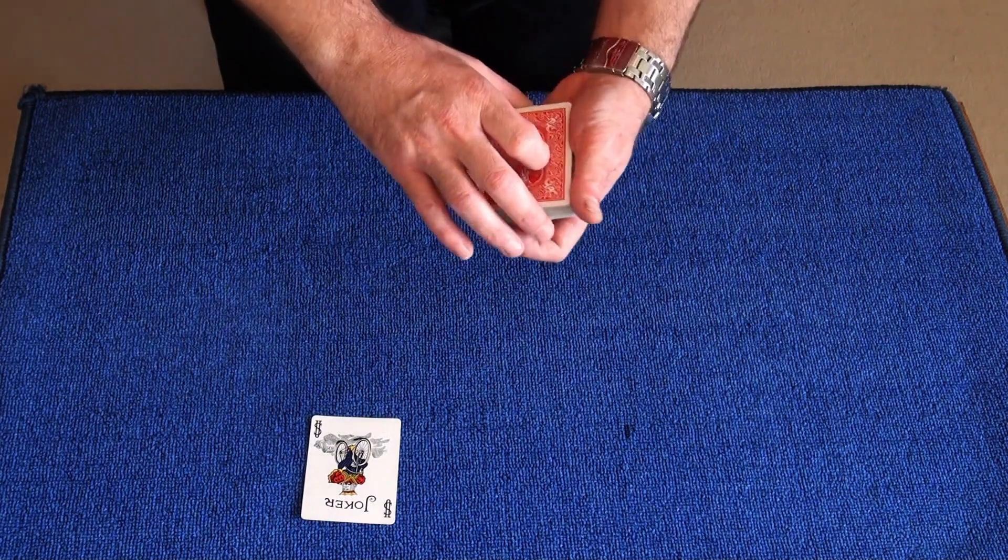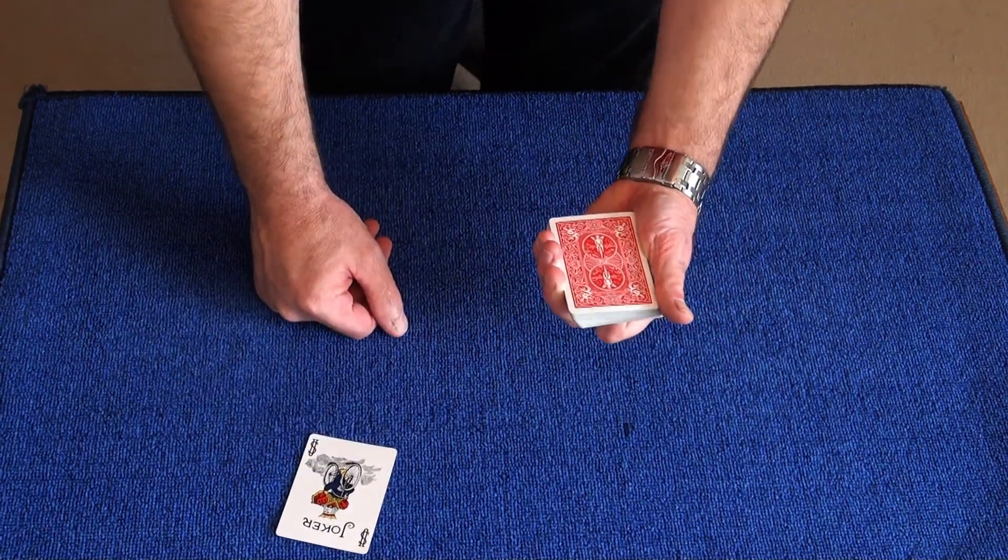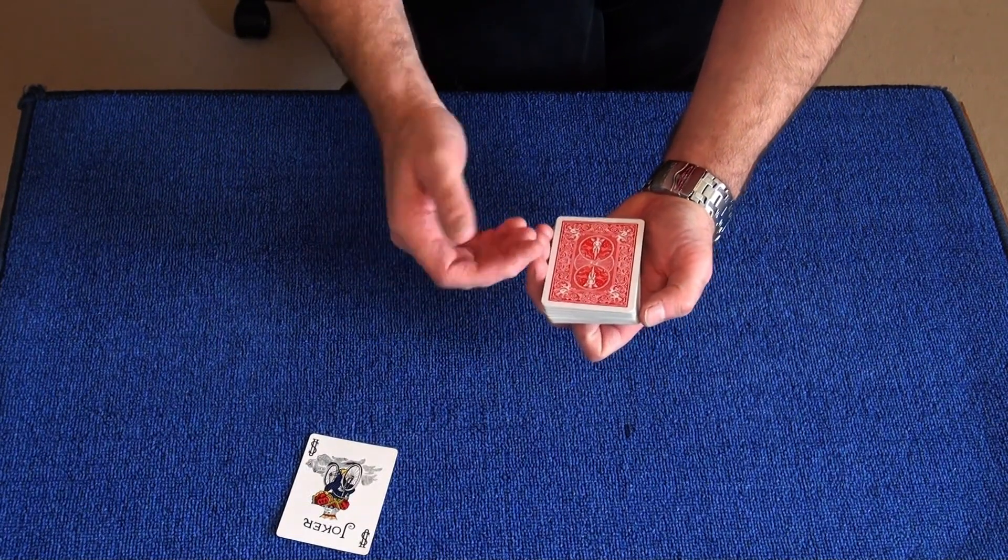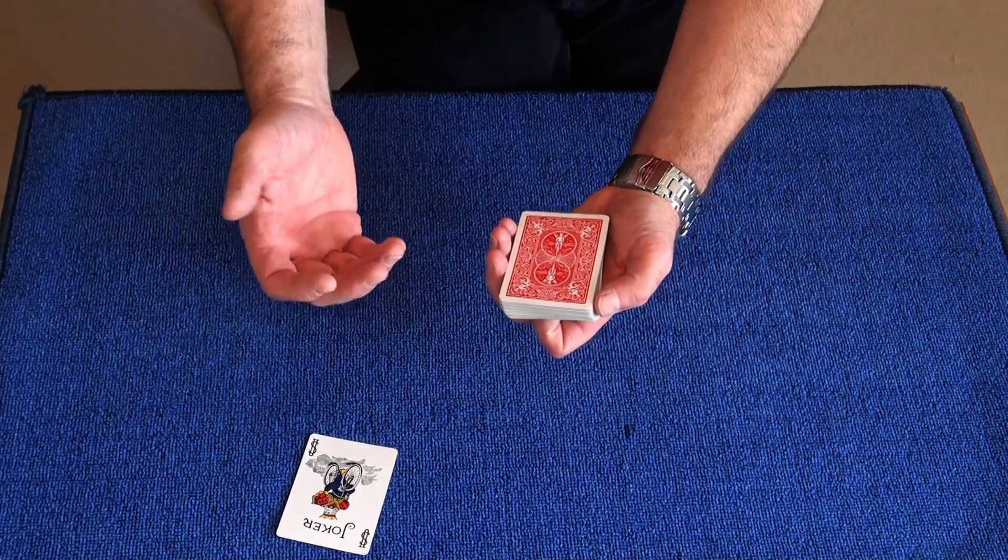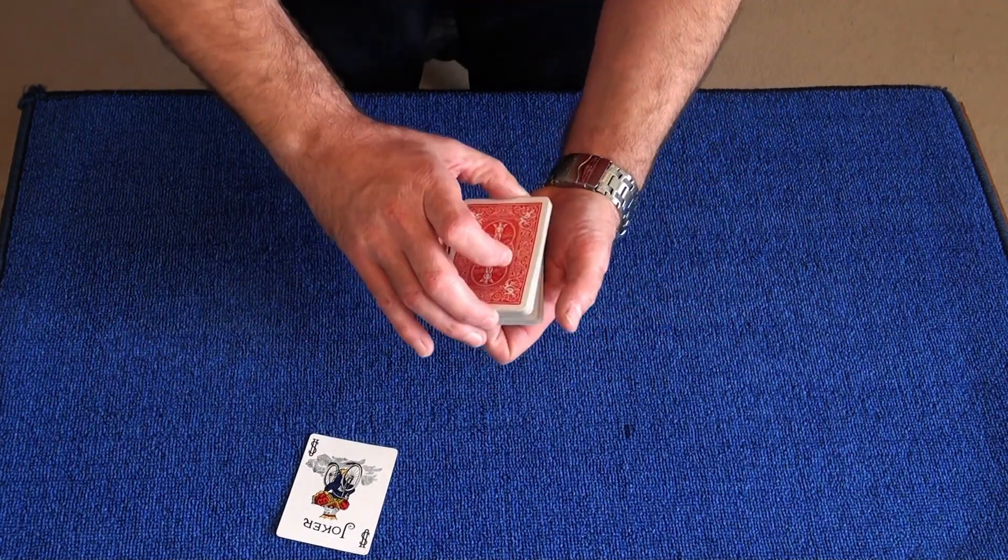Now you say to the first spectator, I want you to cut the deck, say about a third off the top, about a quarter or a third. Now they cut it about there.